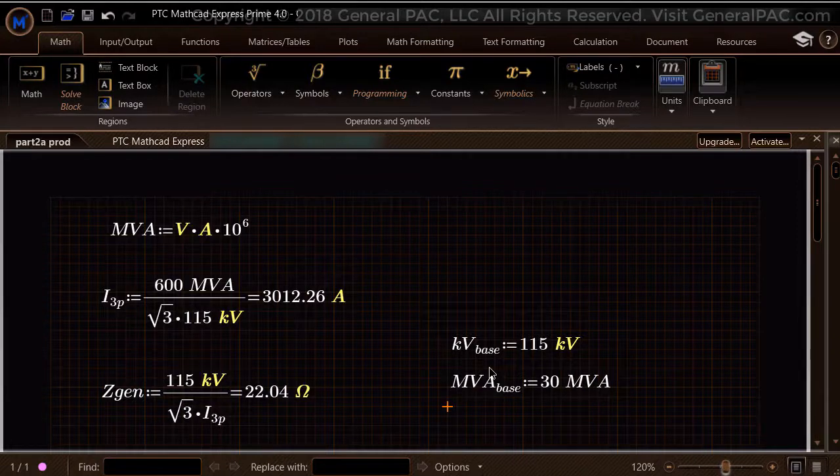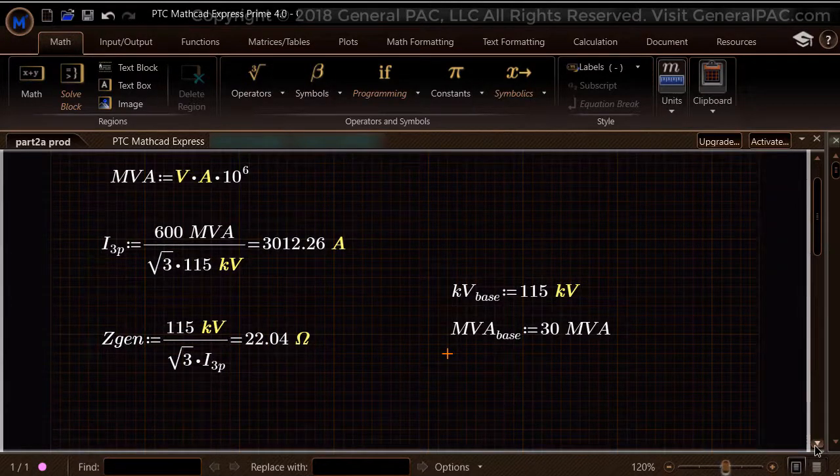This strategy will be explained when we calculate the transformer impedance. Please also note, in many books, articles, and modeling software, the power base is almost always selected as 100 MVA. But we have selected 30 MVA for our power base.